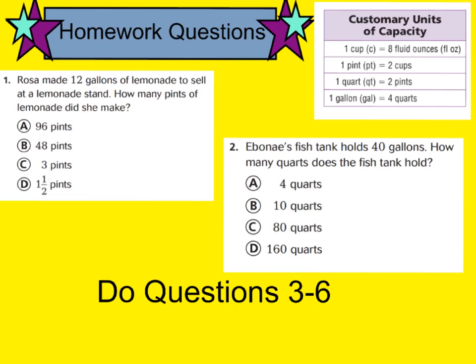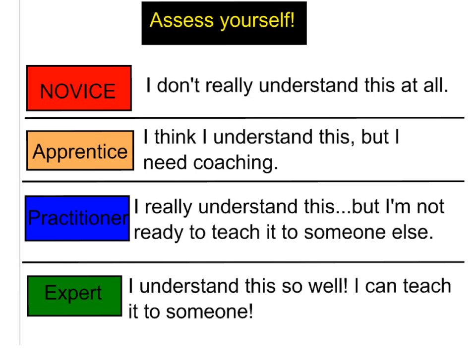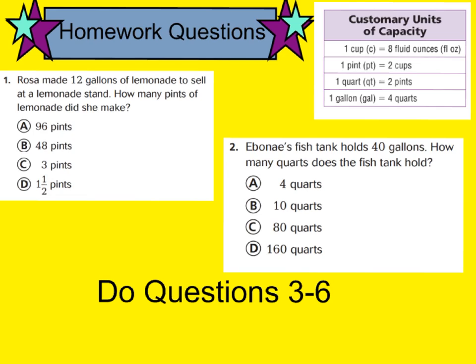Alright boys and girls, go ahead and turn your page over to the back side. Do your best on questions 1 and 2 — read them carefully. I've given you a chart to help you convert anything you need. Also do questions 3 through 6 for a quick review, and at the top of the page rate yourself: 1 novice, 2 apprentice, 3 practitioner, or 4 expert. Tomorrow in class we'll do more questions to get really good at capacity. Finish out these questions and we'll check them tomorrow. Have a great night.